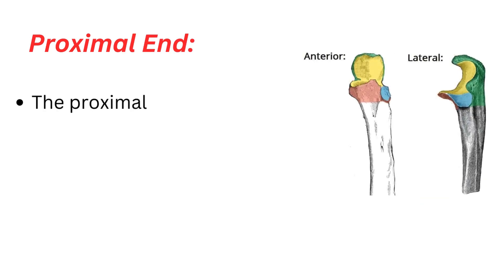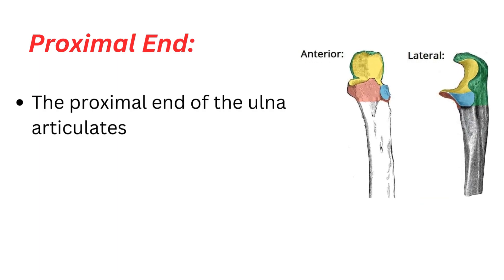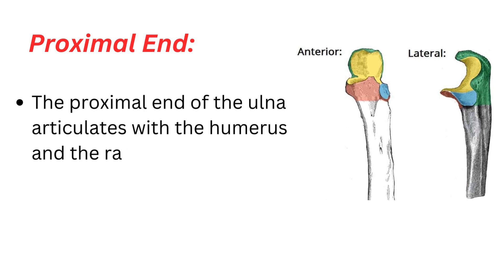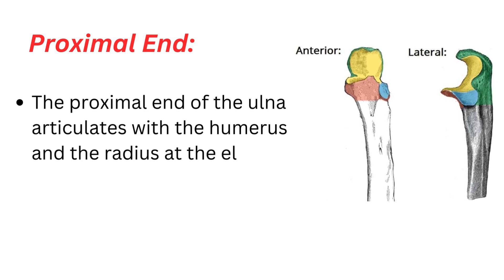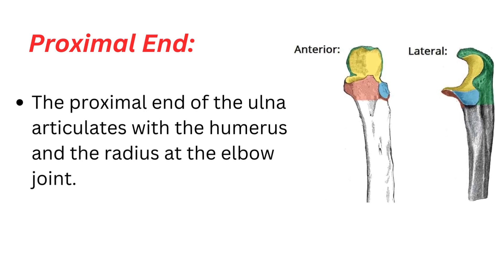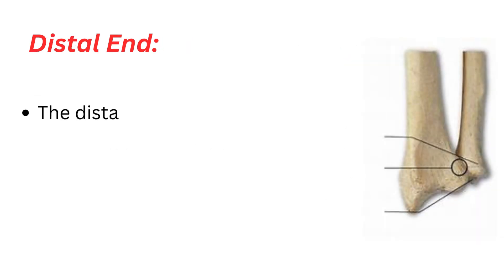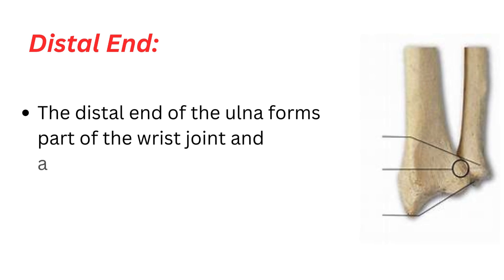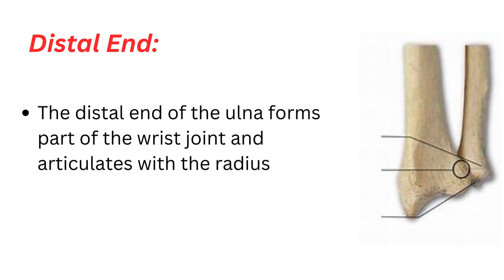Proximal end: the proximal end of the ulna articulates with the humerus and the radius at the elbow joint. Distal end: the distal end of the ulna forms part of the wrist joint and articulates with the radius and the carpal bones.